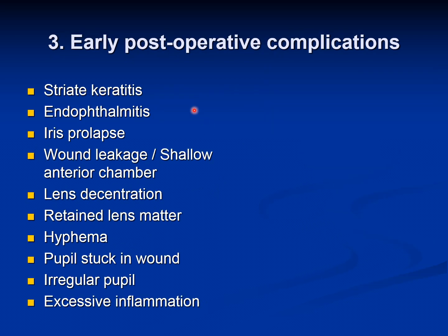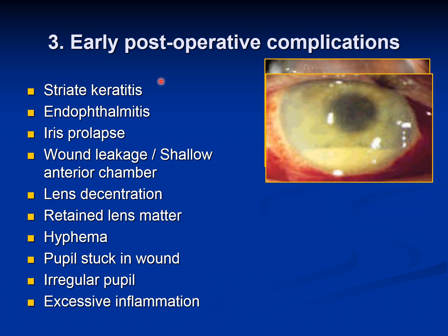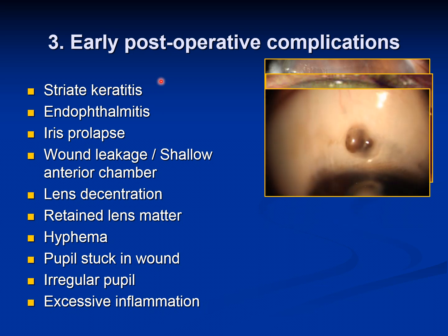Early post-operative complications must be managed starting from the next day. Striate keratitis normally subsides in a few days or two to three weeks, but if severe can lead to corneal decompensation. Endophthalmitis — infection inside the eye — is a devastating though very rare complication that can permanently damage vision if not treated quickly. Iris prolapse is managed according to its nature; normally you reposition the iris so it goes back into the eye.